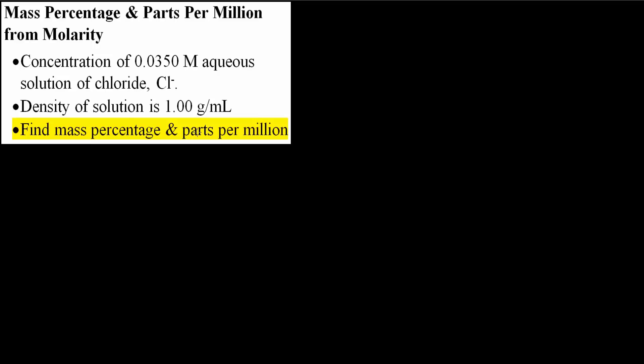In this video we will solve this problem. We have a concentration of 0.035 molar aqueous solution of chloride. The density of the solution is 1 gram per mil. We want to find the mass percentage and parts per million. Let's get started.